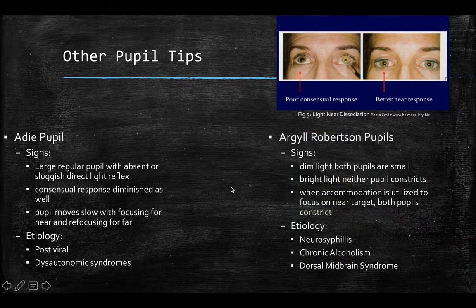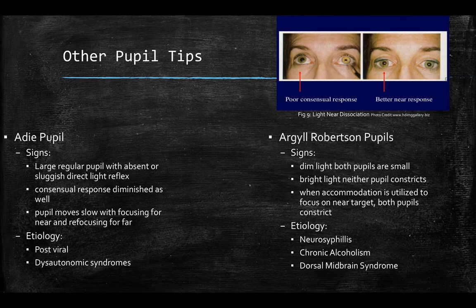There is also something called an Adie's tonic pupil — a large, regular pupil that reacts slowly, like a slug. On direct stimulation it has a sluggish response; the consensual response is also diminished. The pupil also moves slowly when focusing for near or refocusing for distance viewing. The etiology is usually post-viral, although various dysautonomic syndromes learned about in endocrinology can also cause it.